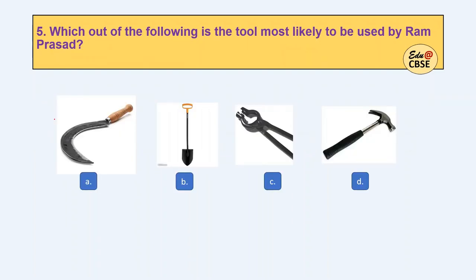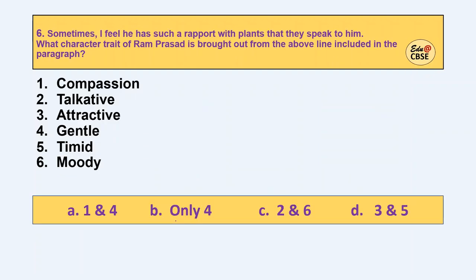Fifth one: which tool would be used by Ram Prasad? This tests your applied knowledge — the answer is the tool that gardeners use. Sixth one: 'Sometimes I feel he has such a rapport with plants that they speak to him.' What character trait does this show? The options are compassion, talkative, attractive, gentle, timid, and moody. The line shows his compassion towards plants — he is soft and gentle. So compassion and gentle — answer A — is correct.